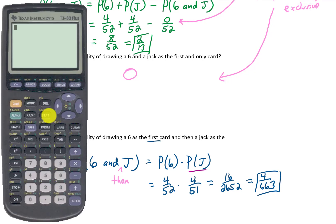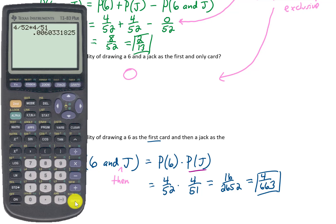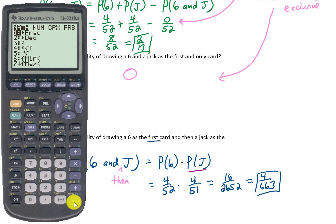I'll show you how to enter this into your calculator to get that fraction. We're multiplying 4/52 by 4/51. Our calculator will typically spit out a decimal. If we want the calculator to give us a fraction, we can hit the Math button, hit Enter, and then hit Enter one more time, and it gives us our reduced fraction.